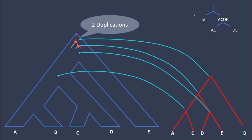From here we can see how the gene is being duplicated. First, B gets speciated, so the gene duplicates — one copy goes only to B, and the other goes to ACDE. Then the duplicated gene for ACDE will again duplicate and create two branches: AC and DE. This is how these genes got duplicated, and they will keep going forward as distinct genes.